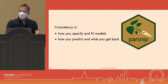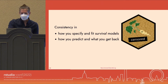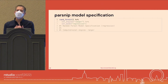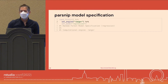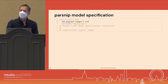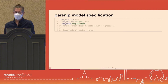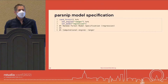What I'm really here to talk about is censored, which is a parsnip extension package for survival models. I'll be talking about how these design ideas play out with survival analysis. To specify and fit models in parsnip you need three elements: first, the model type — in this example it's a random forest; second, the computational engine used to fit the model — here that's the ranger package, though it can also be tools outside R like Stan for Bayesian models; third, the mode — since a random forest can be used for regression or classification, you need to specify that. These three elements are consistent in parsnip and will also show up in censored.